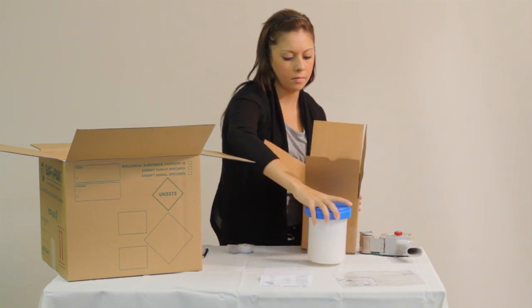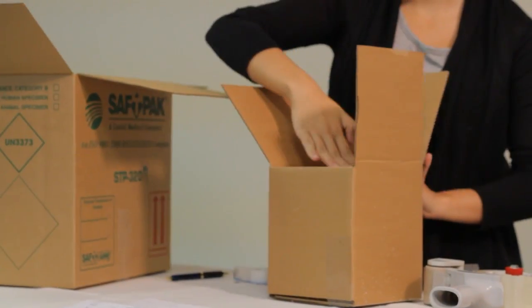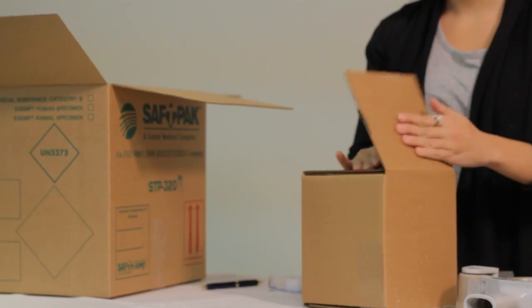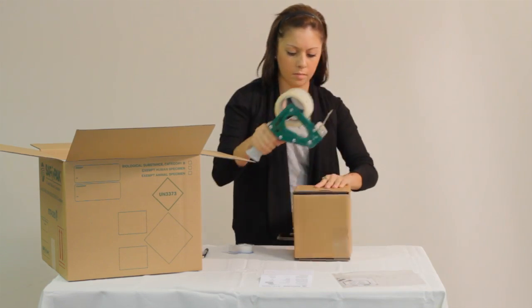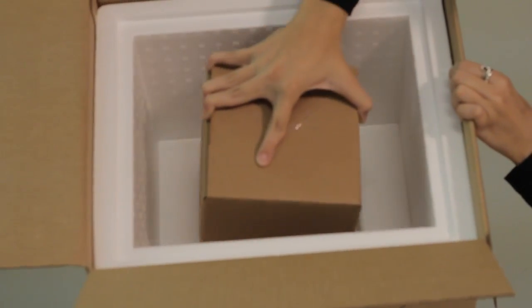Place the secondary packaging inside of the inner box. Place the inner box in the recessed area of the insulated chest.